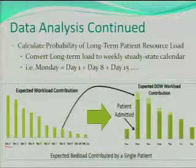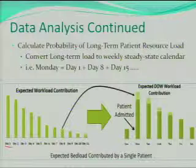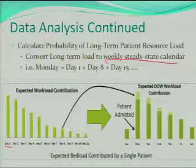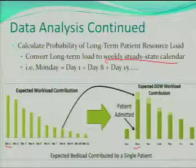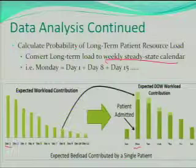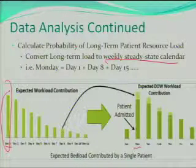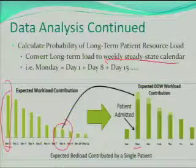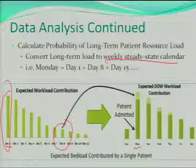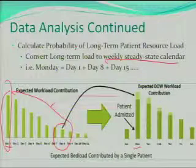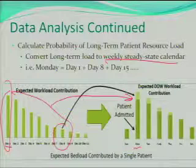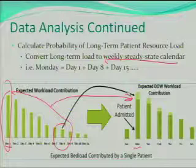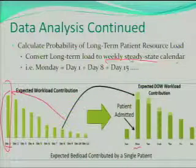To convert this from a long-term view to a weekly steady-state calendar, suppose we look at a patient admitted on Monday. We take their day one data, then look at day eight, day 15, and so on — all the way until the last possible day someone stayed. We then combine these to create the cumulative probability that someone might be in the hospital on a Monday. We went through and did this for each patient type, each grouping, and also for each day of the week.